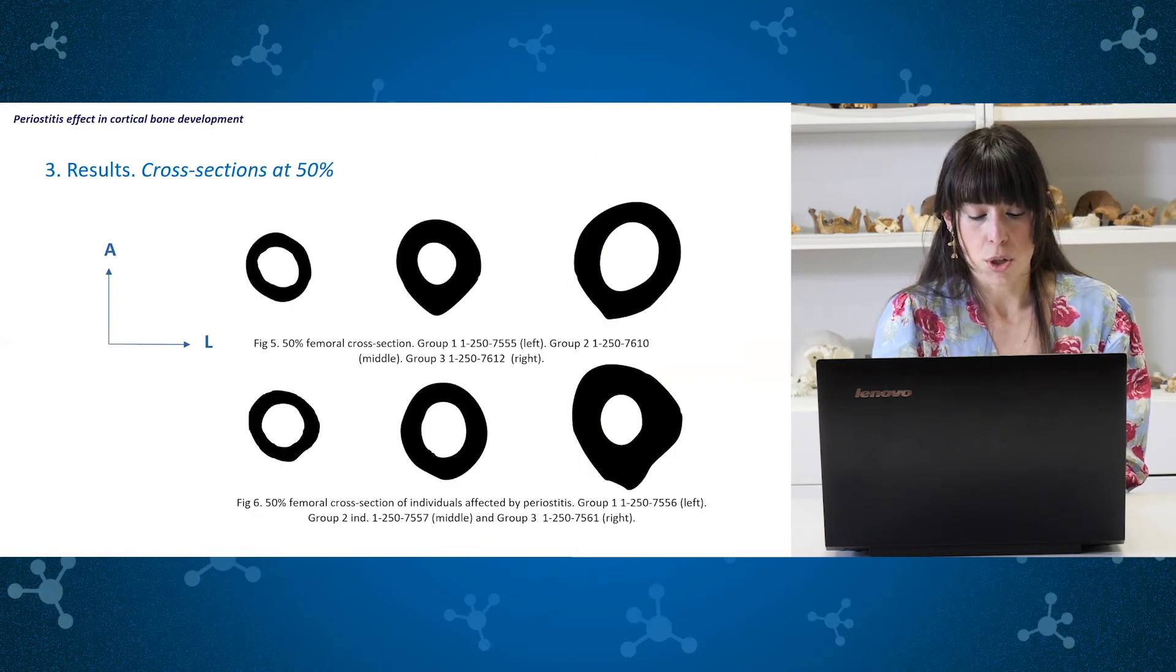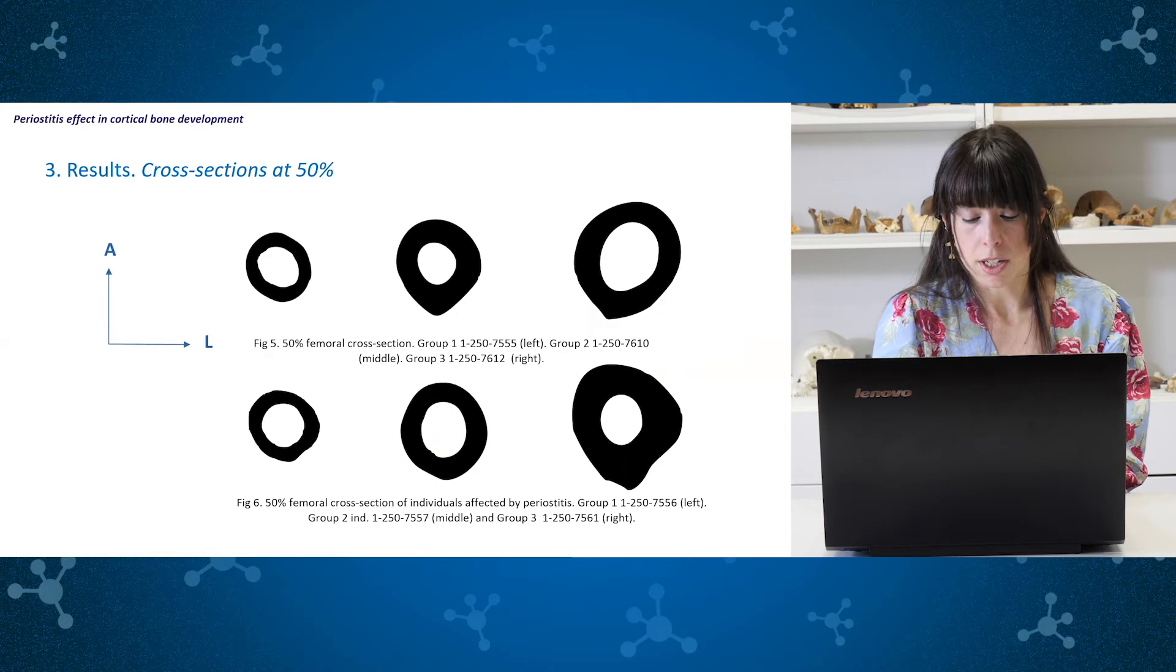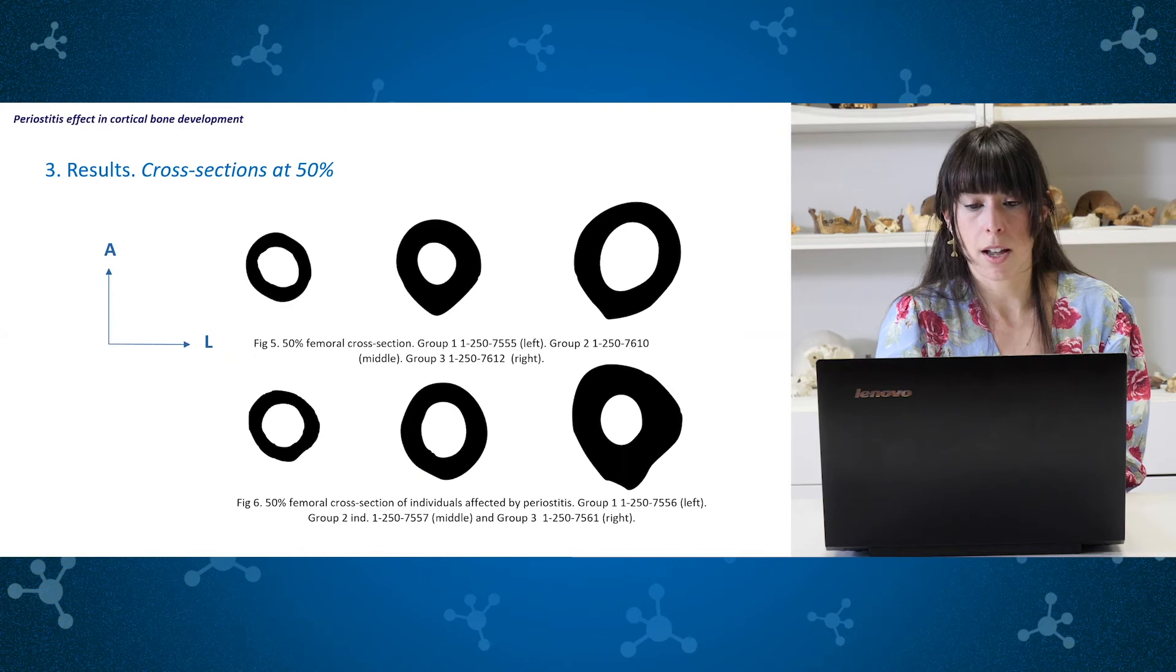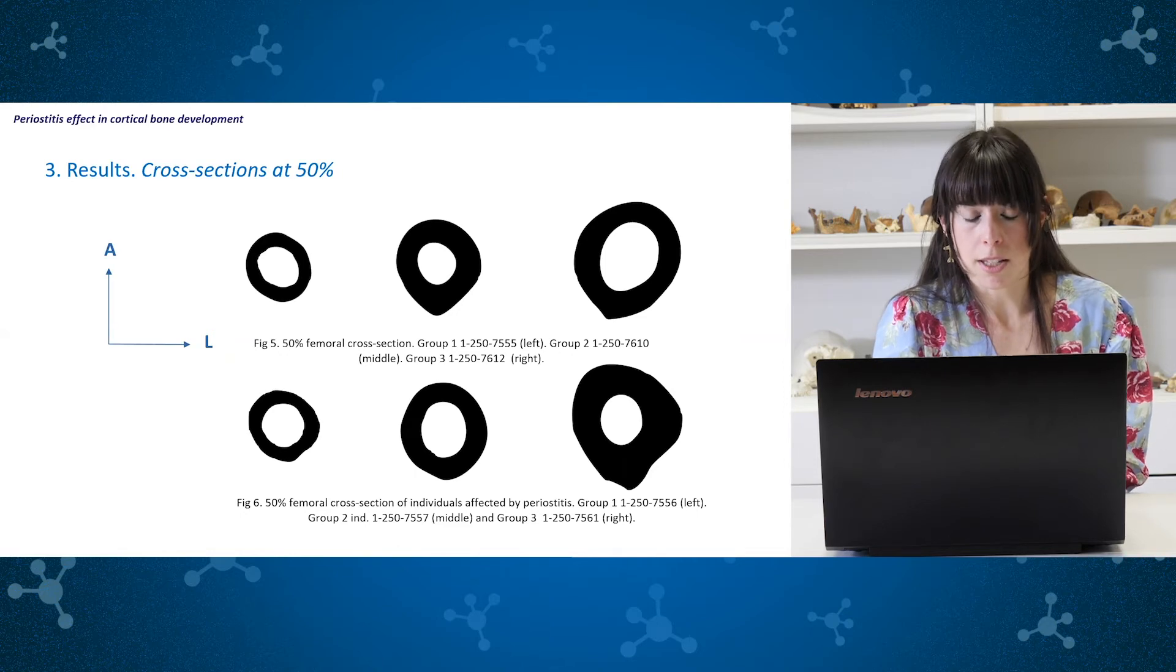Femoral cross sections were analyzed at 50% as it can be seen at the screen. It shows cross sections of individuals of each group of age. First row shows the non-stressed individuals and at the row below are presented individuals affected by periostitis. There are some evident differences in geometry and shape that are related to growth and development.